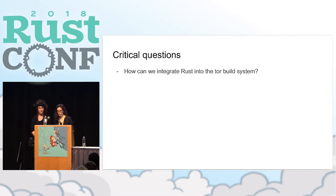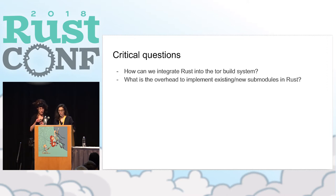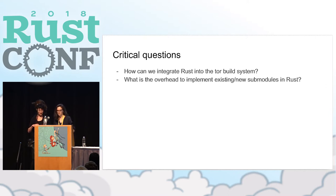One critical question was how could we integrate Rust into the Tor build system. This code base has been around since 2002, there's a lot of old tooling and complexity, and we didn't want to rewrite our entire build system. We wanted to just do a drop-in and start integrating Rust right away. Another question was what is the overhead to implement existing or new submodules in Rust — we didn't want to do a rewrite-the-world approach.